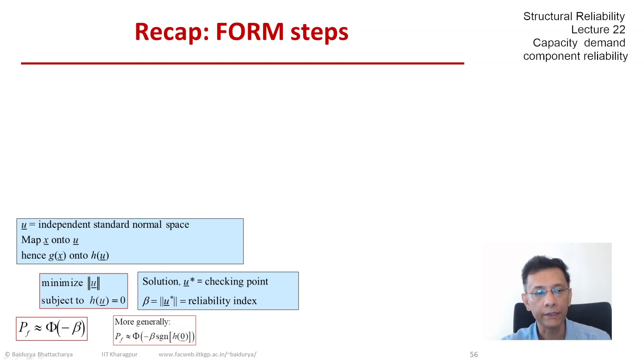To be more correct, we need to take the sign of the limit state at the origin, whether the origin is in the safe set or not. But typically it is, so we ignore that signum function.